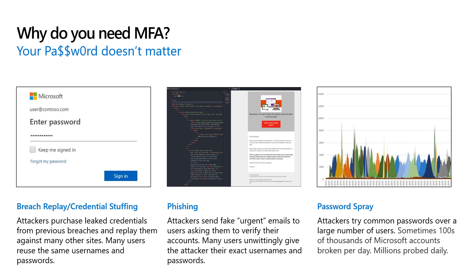Next, there's phishing. Phishing involves users receiving an email that asks them to click a link and provide their credentials. This is usually accomplished by including an urgent message — for example, it might say you must log in and verify some information or your bank account will be frozen. No one wants this to happen, so they might unwittingly click the link and give their exact password away.